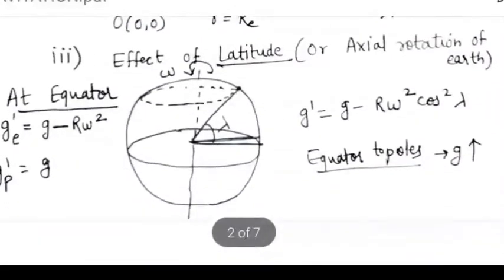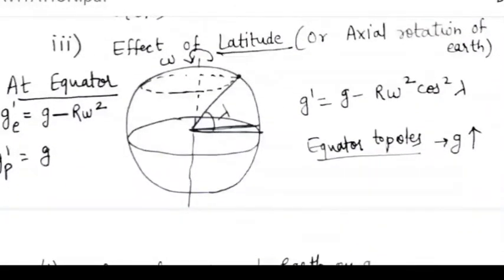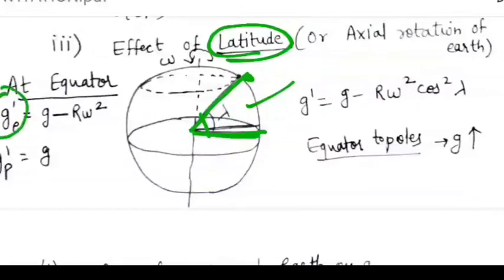Next point is the effect of latitude or due to the rotation of Earth. First, understand the term latitude. Suppose this is the equatorial radius and this is the body kept on the surface of Earth. Then the angle made between these two lines will be called as the latitude. The relationship of change in g is g minus R omega square cos square lambda. According to the places, the value of this latitude may change.